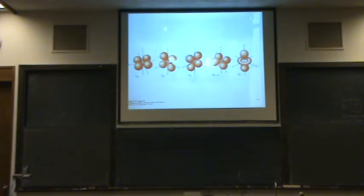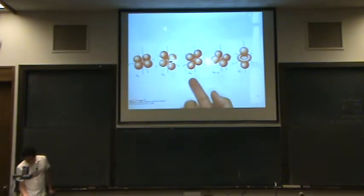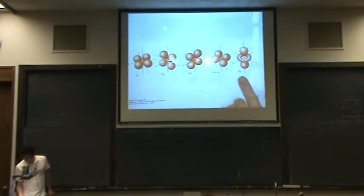Okay, so here's a beautiful picture of the d orbitals. There's five of them again. The dxy, the dyz, the dxz, the dx squared minus y squared, and the dz squared.